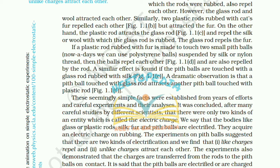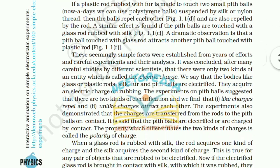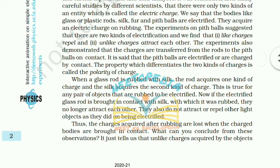These seemingly simple facts were established from years of careful experiments. It was concluded that there were only two kinds of an entity called electric charge. Bodies like glass rods, plastic rods, silk, fur, and pit balls are electrified — they acquire an electric charge on rubbing. The experiments on pit balls suggested that there are two kinds of electrification: like charges repel and unlike charges attract each other. Charges are transferred from the rods to the pit balls on contact.